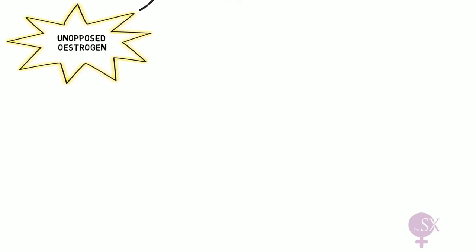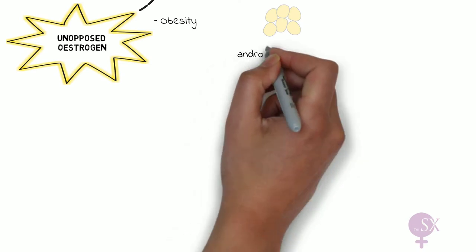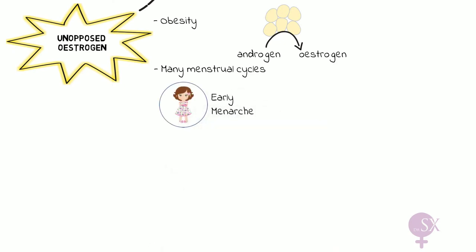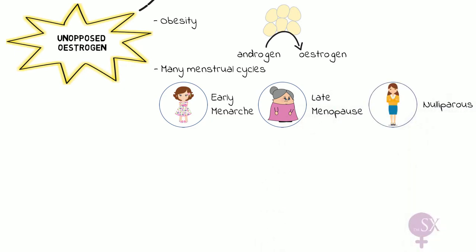Looking at risk factors which cause high levels of unopposed estrogen: obesity causes adipose tissue to convert androgens to estrogen, so more adipose tissue means more estrogen. Patients with many menstrual cycles are also at risk, as more cycles means more estrogen exposure to the endometrium. This includes cases of early menarche, late menopause, or nulliparous women — all of whom have many menstrual cycles and therefore increased risk.